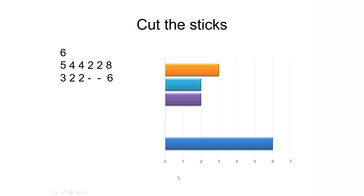Now we need to repeat this operation as long as there are any sticks left. We have four sticks left here. The first stick is of length 3, the second and third sticks are of length 2, and the last stick is of length 6. Among these, the smallest is the second and third one whose length is 2. So we cut every other stick with this particular length. After this operation, the first stick will have a remaining length of 1, and the last stick — from 6 if you remove 2 — will have a remaining length of 4.